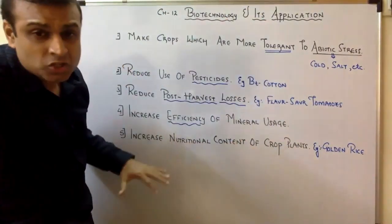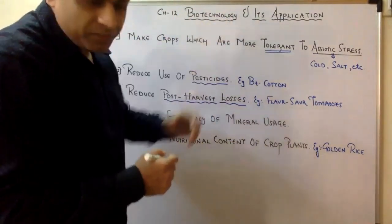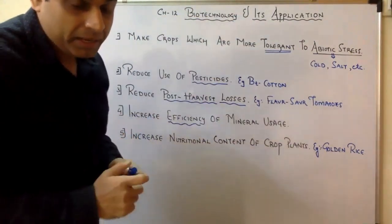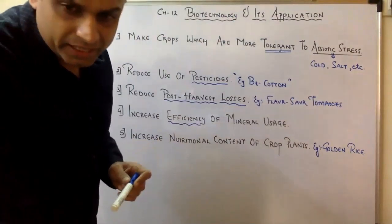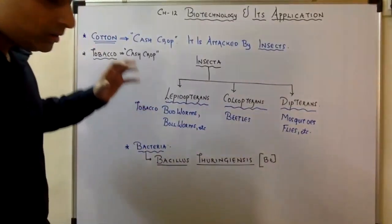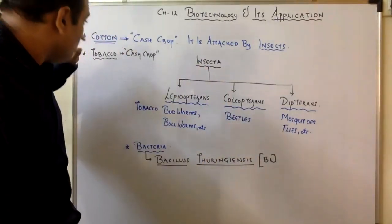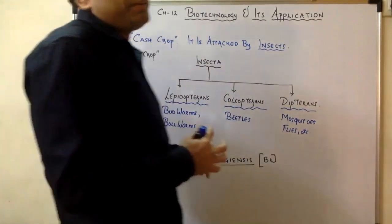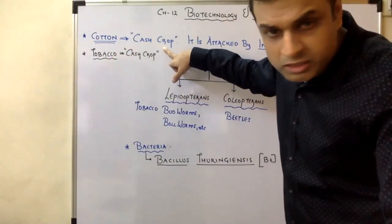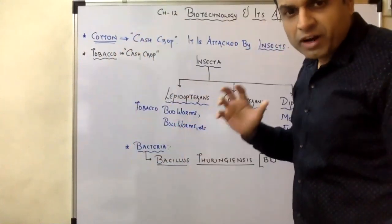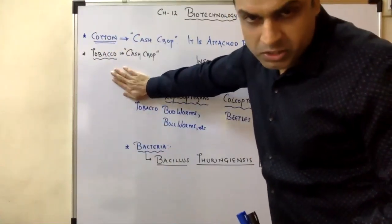These are the main aims of making genetically engineered plants. In Chapter 12, we have to learn in detail how we make pest-resistant plants. We will now study BT Cotton. Cotton and tobacco are two important cash crops for India — no one eats cotton, we use it, so it is called a cash crop. We earn a good amount of money from these two plants.